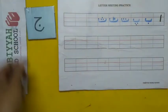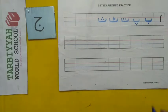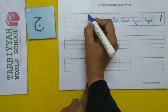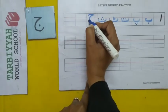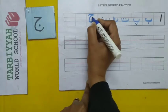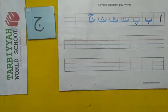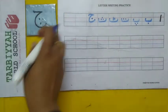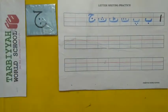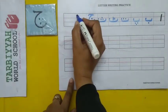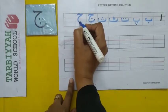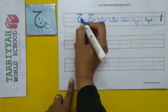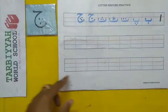So our next letter — what comes after Se? Jeem. So how do we write Jeem? Like this — one sleeping line and one curve, and one dot below. And what comes after Jeem? Che. So how do we write Che? Same shape, but with three dots on the back. Like this.